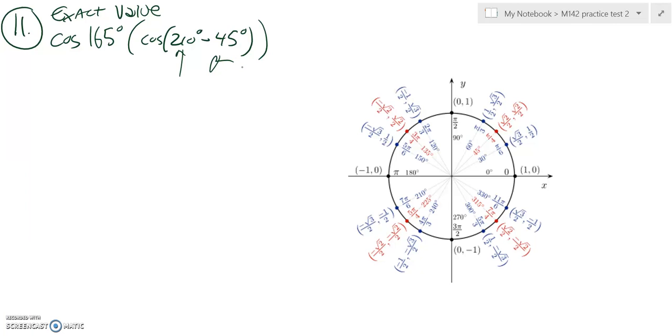We use the formula for cosine subtraction: cosine of the first angle multiplied by cosine of the second angle, then opposite operator, sine of the first angle multiplied by sine of the second angle.